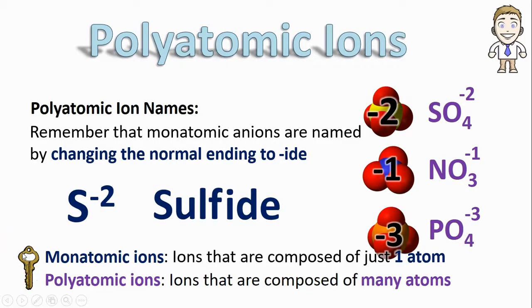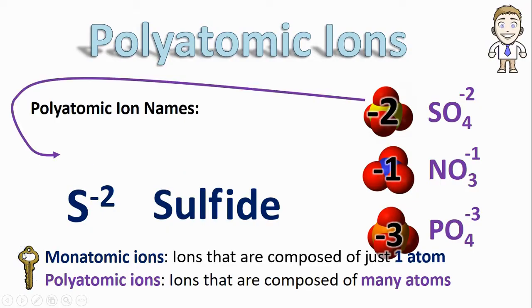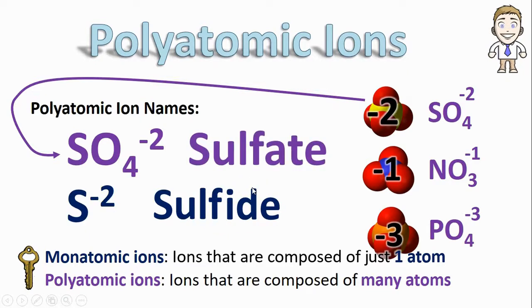A similar thing happens with our polyatomic ions. Take SO4, for example. Because it contains a sulfur atom just like the sulfide, we're going to use that same S-U-L-F sulf prefix, we just can't call it sulfide. Generally polyatomic ions are given the ending -ate, so SO4 minus two is called sulfate.